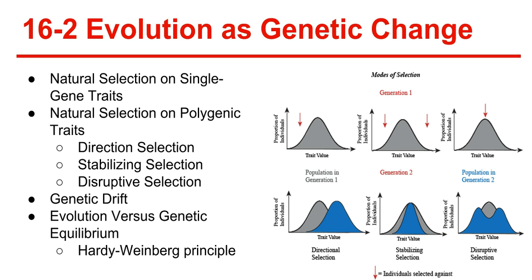Genetic drift is a random change in allele frequency. In small populations, individuals that carry a particular allele may leave more descendants than other individuals just by chance. Over time, a series of chance occurrences can cause an allele to become common in a population. This may occur when a group of individuals with different relative allele frequencies colonize a new habitat, forming a smaller population. A situation where allele frequencies change as a result of migration of a small subgroup is known as the founder effect.